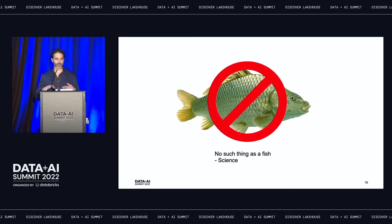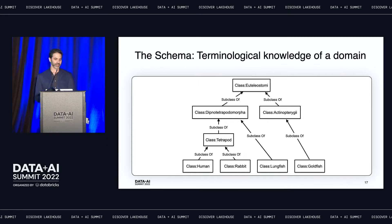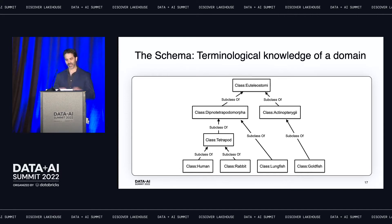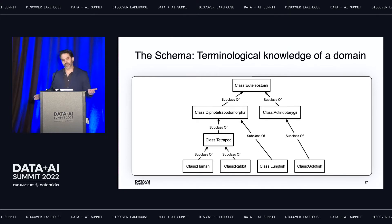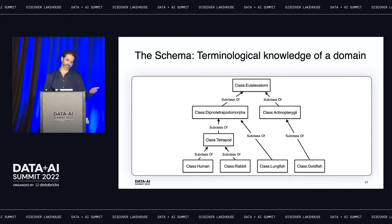Fish inherit from different common ancestors, so there's no common ancestor 'fish' that other fish inherit from. Science says fish are being split into two classes called dipnotetropodomorpha and actinoteregi, so all fish now inherit from those two classes. While the rest of the world scrambles to change and transform their data to work with these new classes, we're not worried because we're using a knowledge graph with a schema and logical inferencing. All we need to do is change one line in our schema.